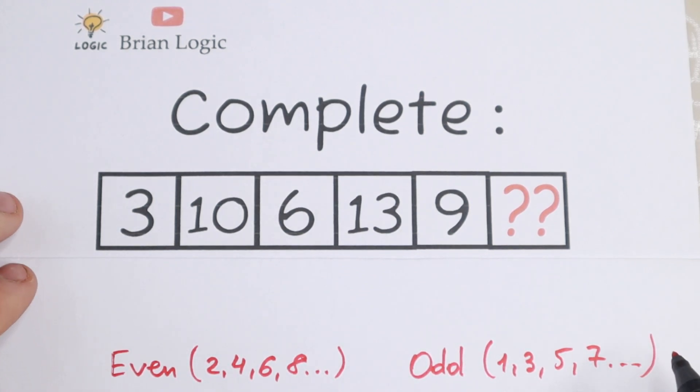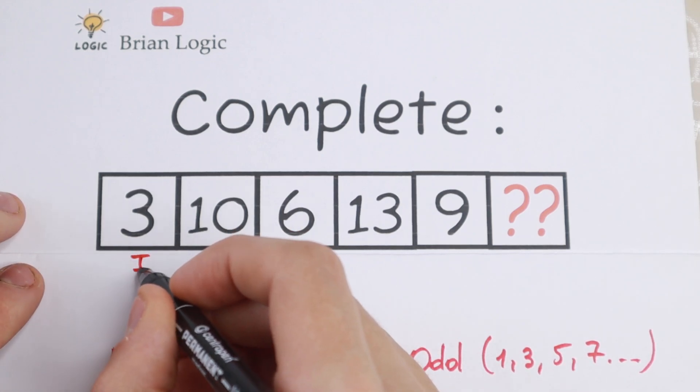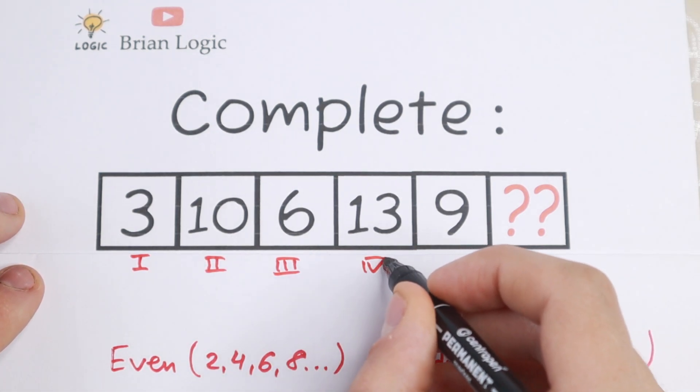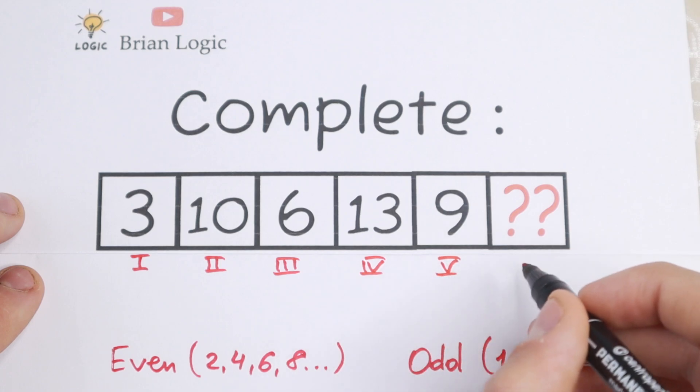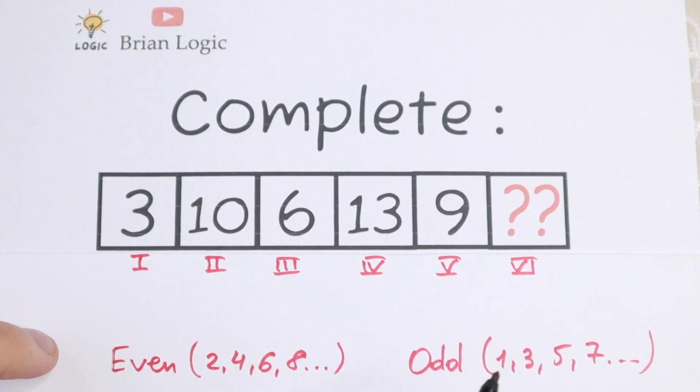Right now I want to write under these numbers. This is our first number, this is our second number, this is our third, this is our fourth, and this is our fifth number. We need to find the sixth number. Why do I write this? Because I see a really good pattern between all of these numbers. We have even positions and we have odd positions. Take a look.